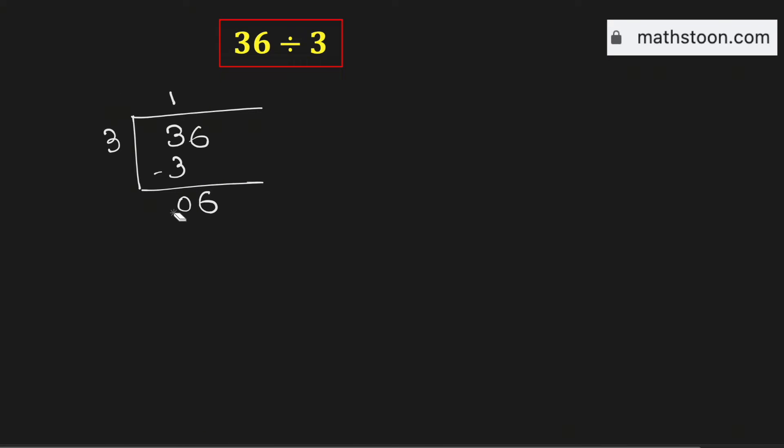As there is no meaning of 0 on the left hand side so we can remove it. Now we know that 3 times 2 is 6. Now subtract we will get 0. Therefore 36 divided by 3 is equal to 12.